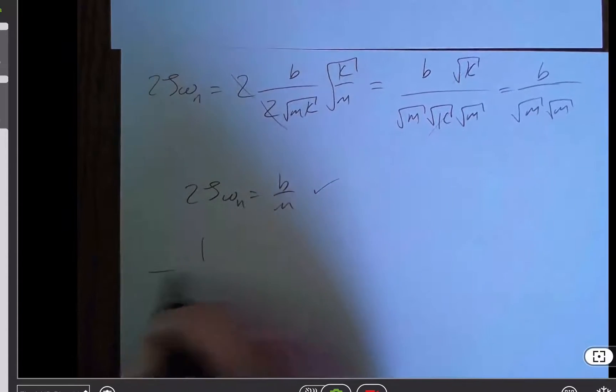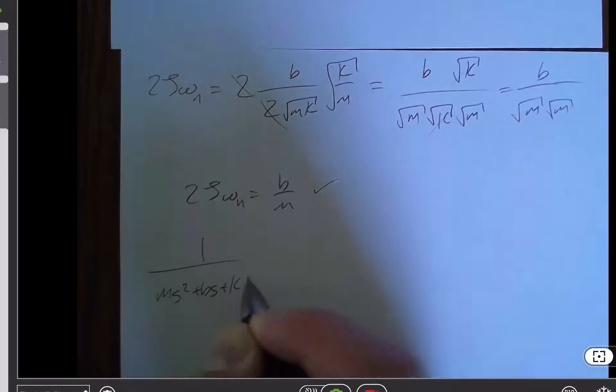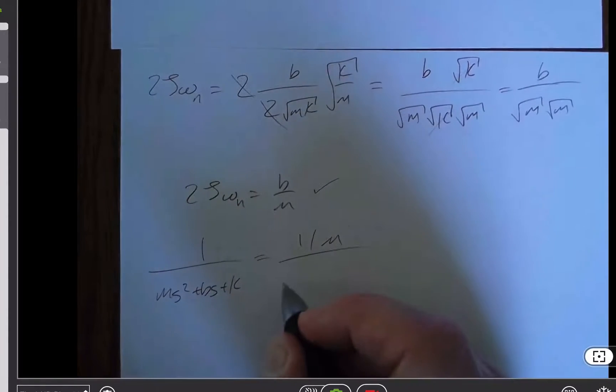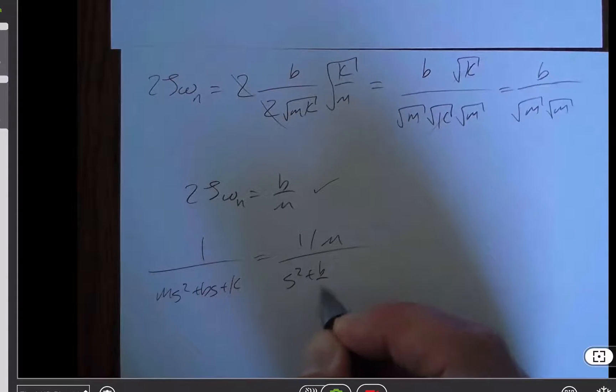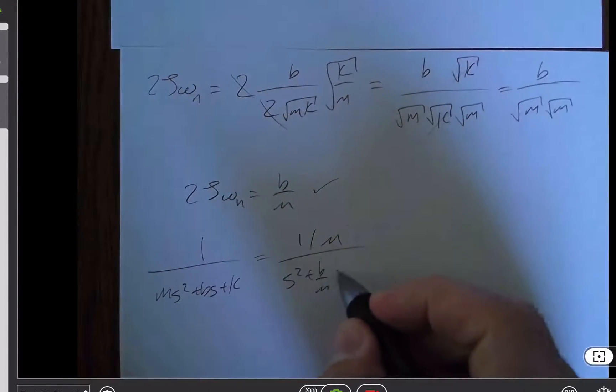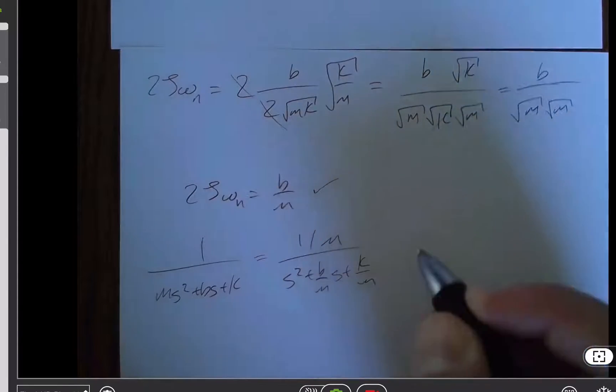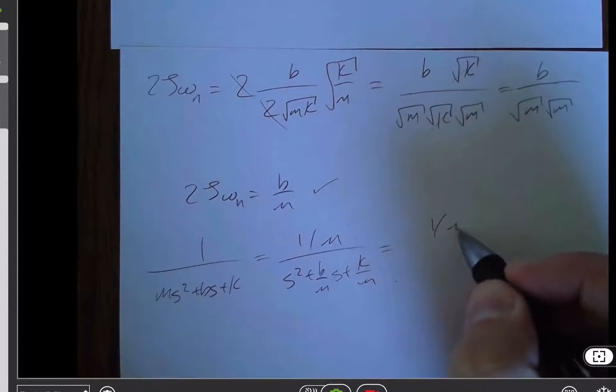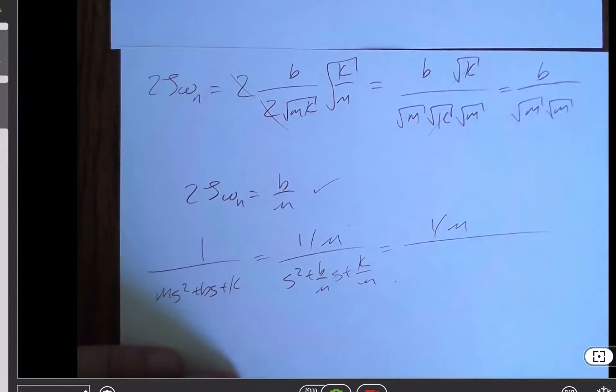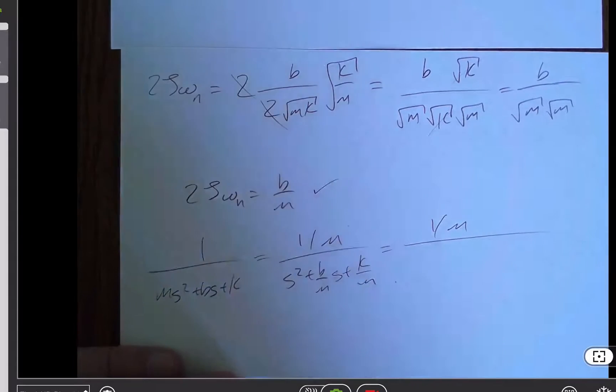So if I start with 1 over ms squared plus bs plus k, and I divide through by 1 over m, I get s squared plus b over m plus s, sorry, plus k over m. And I'm saying we can either prove this to ourselves with our definitions of b critical and zeta and so on and so forth.